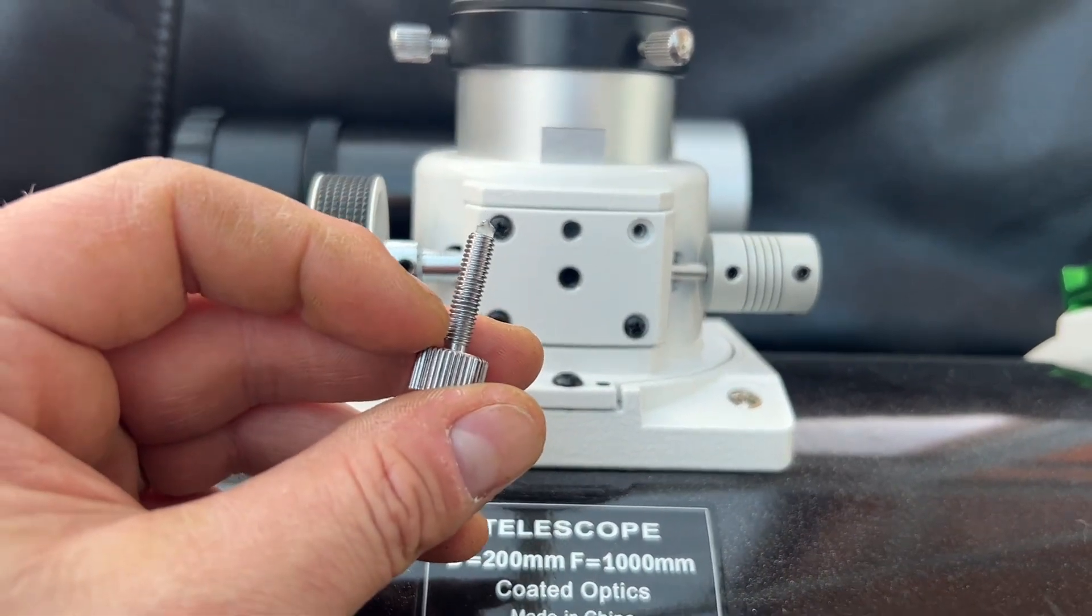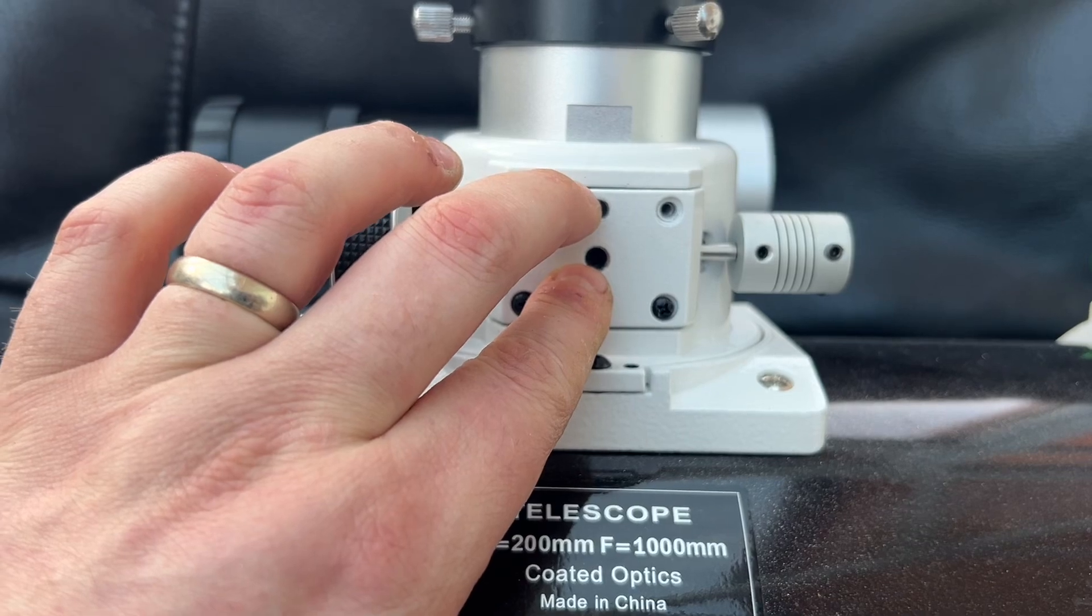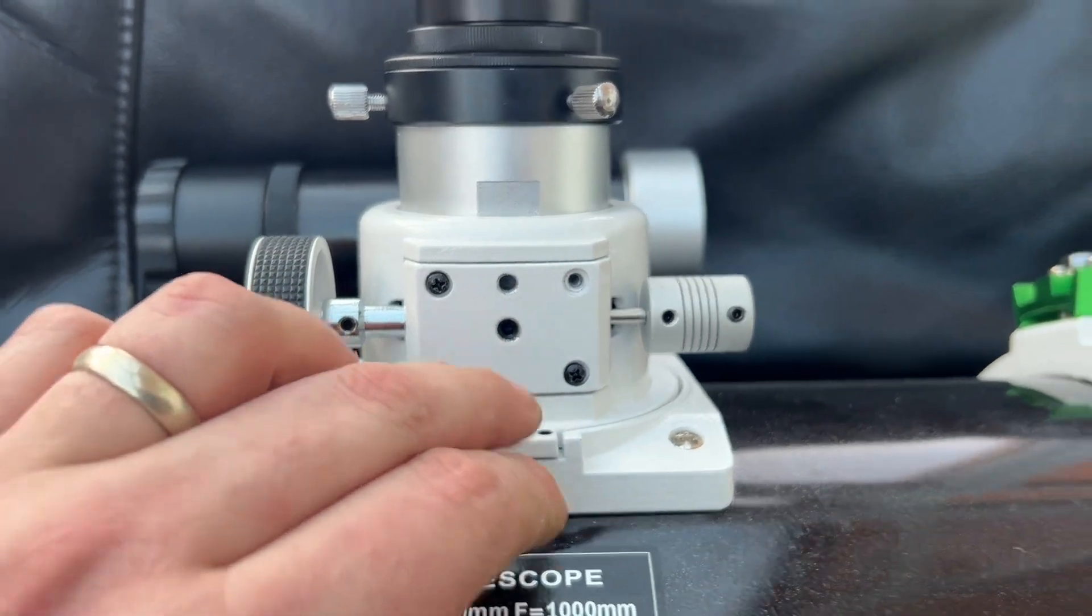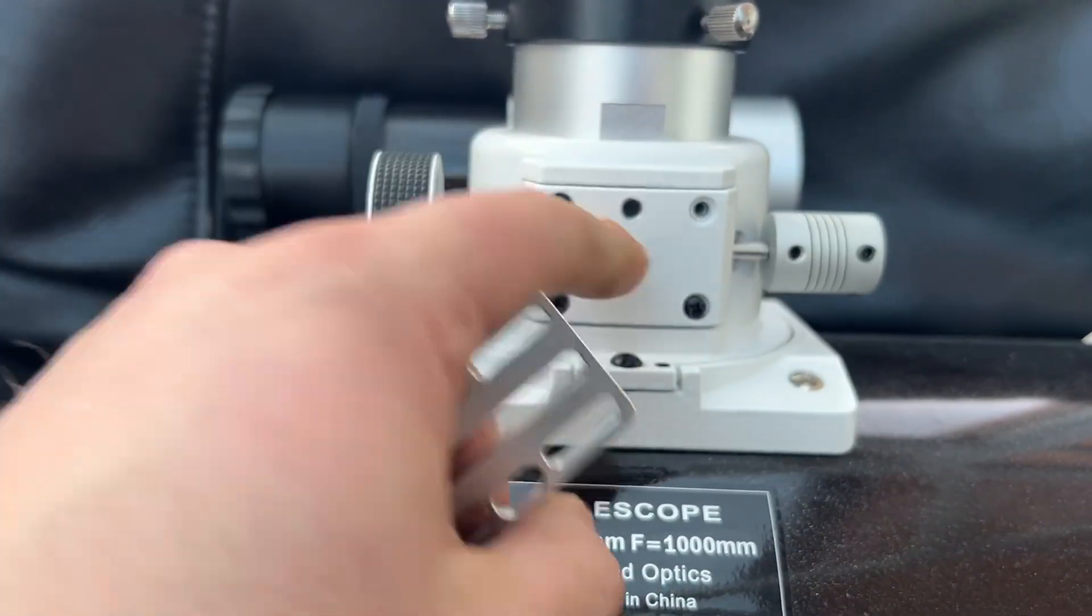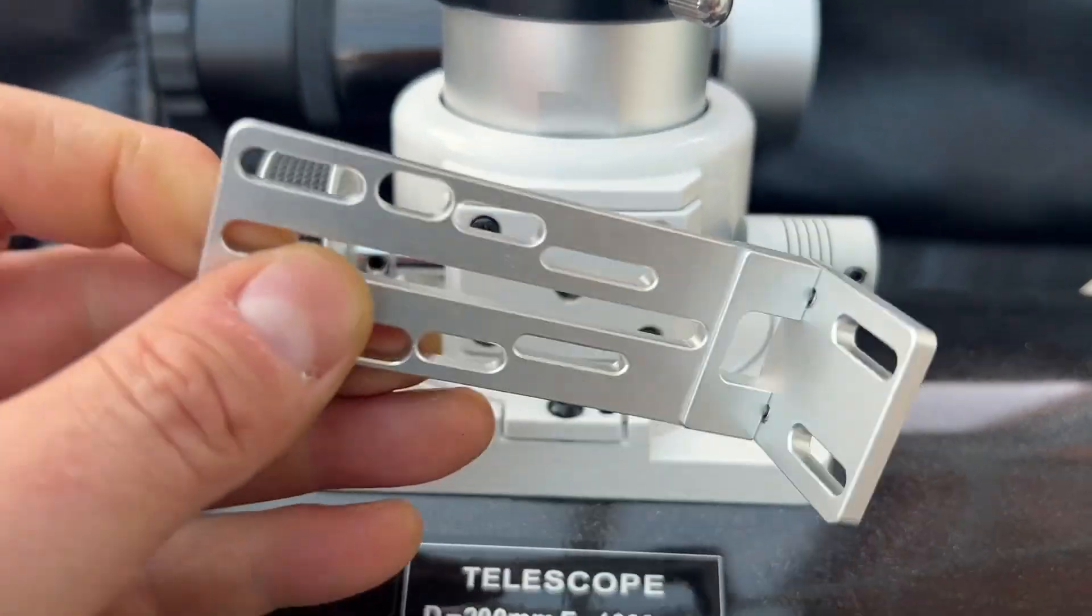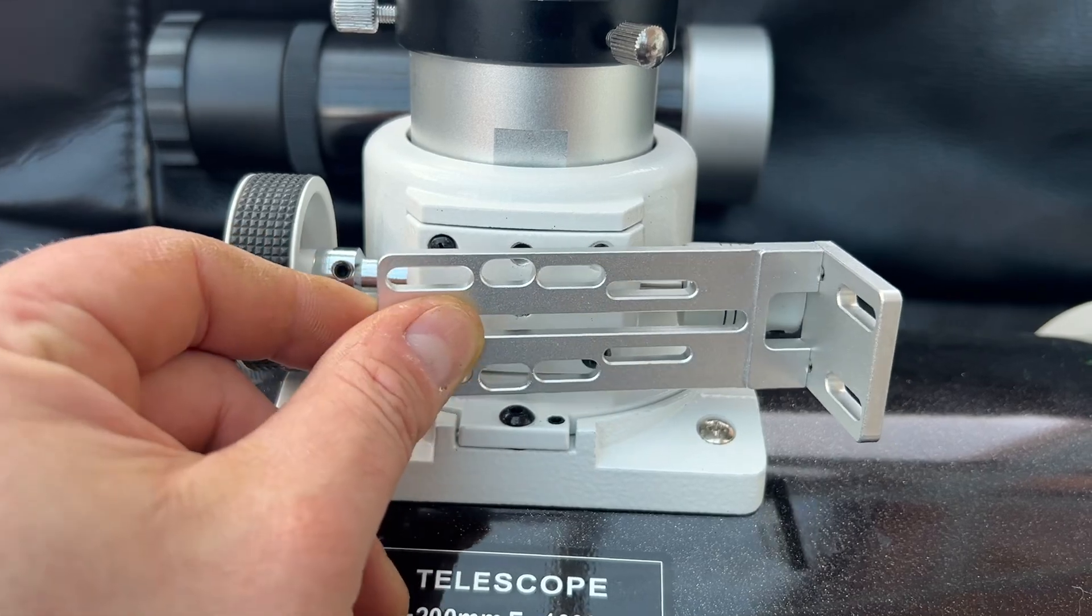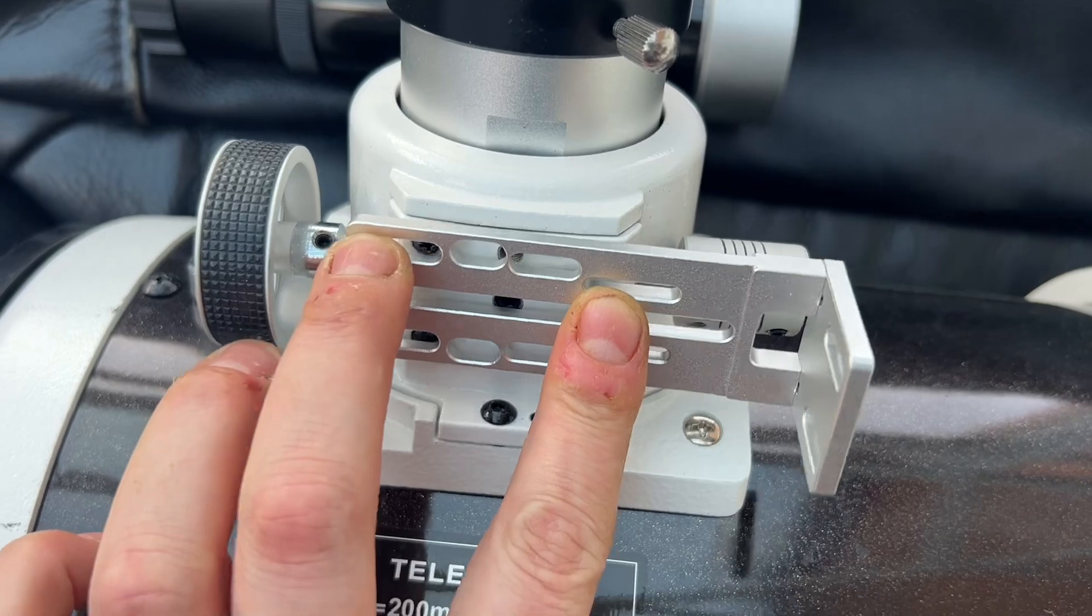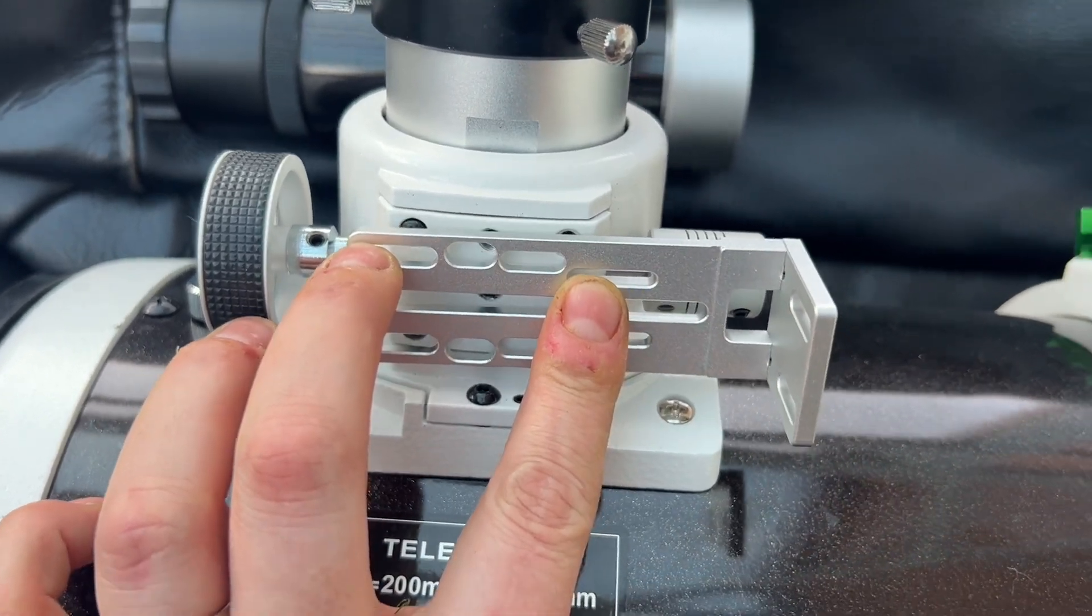Normally on some other models of this Crayford focuser, there's actually two screws available to screw in the bracket. On this model, there's only one, but more than that, this side here is actually curved. So what happens is when you offer this up to the side—it's difficult to do it one-handed—but this actually is moving. If you can see there, it's rocking back and forth.